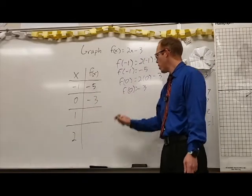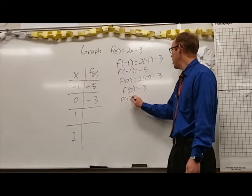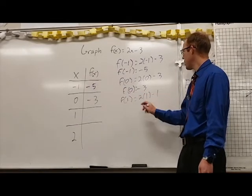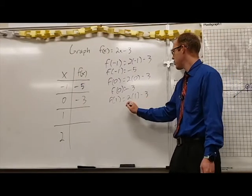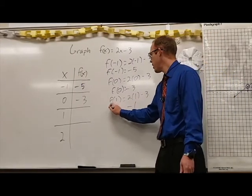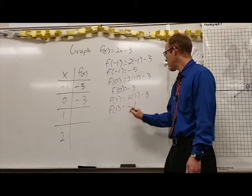Our next one is 1. f(1) equals 2 times 1 minus 3. 2 times 1 is 2 minus 3 gives us -1. So f(1) equals -1.